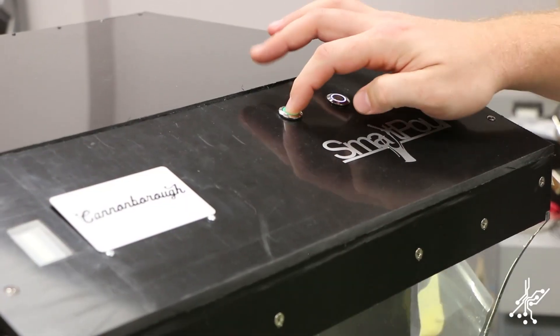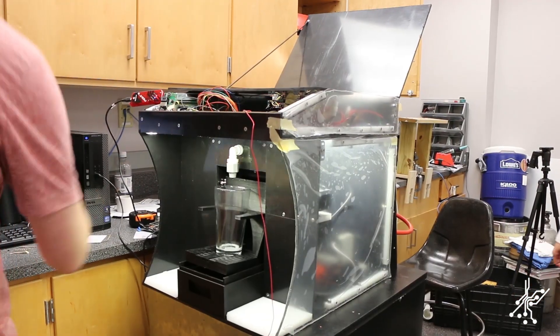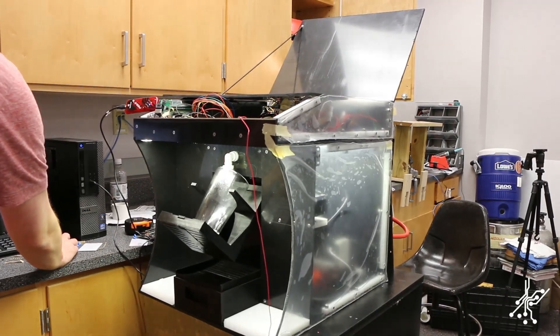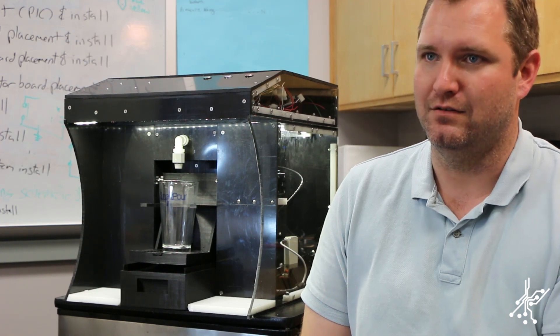When the start button is pressed, the motor system turns on through the relay board. This sends a signal for motor direction and begins rotating the motor through the pulse-width modulation. For our prototype, the motor initializes the pour sequences to begin at an optimal 45 degree angle.